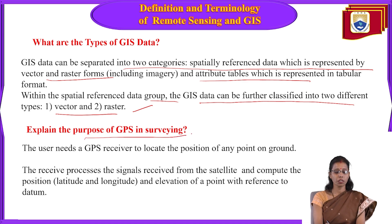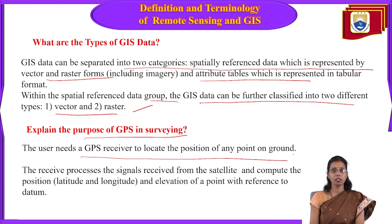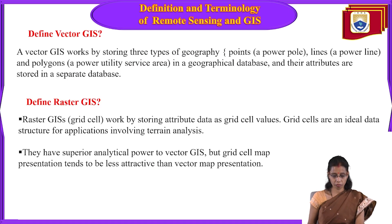The purpose of GPS in surveying: the user meets GPS receiver to locate position on the ground. It receives and processes signals from satellites to compute the position — latitude, longitude, and elevation of a point. All this information is provided by the GPS system.